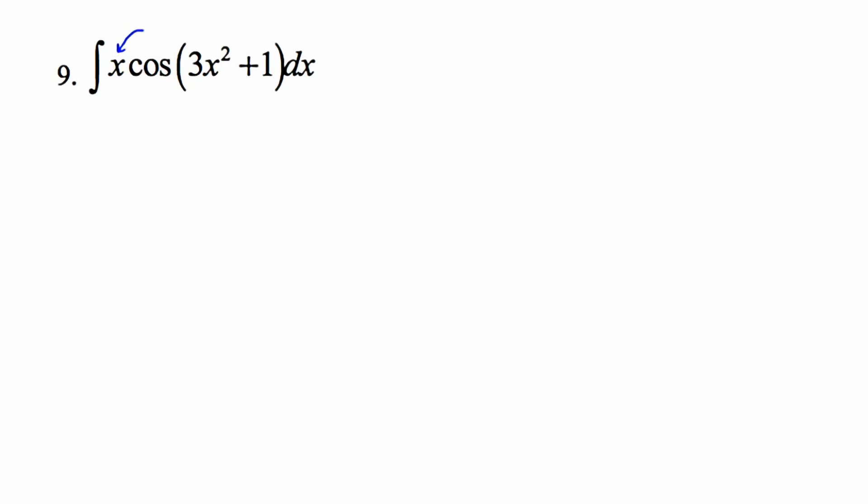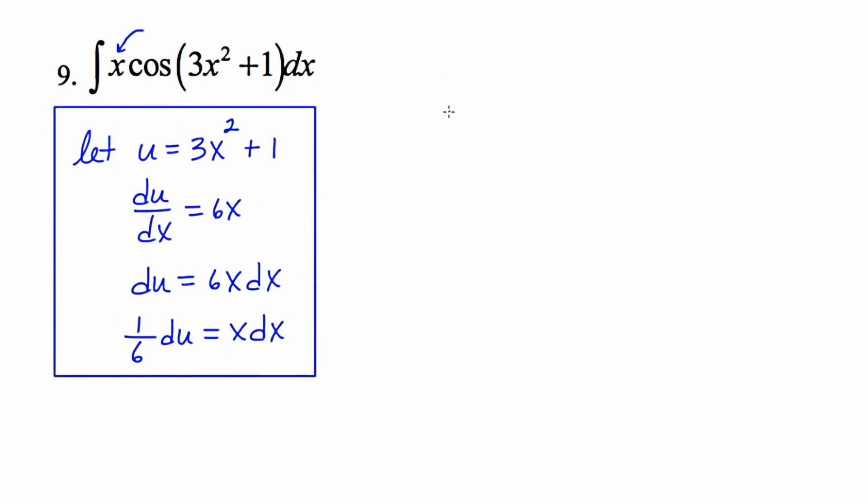So I'm going to go ahead and let u equal 3x squared plus 1, which means that du/dx would equal 6x. Du would equal 6x dx, and that 1/6 du would equal x dx. I'm going to take these four components and put them in a box. And I'm going to rewrite the problem with that x that's in the front and the back. So I'm going to start with cosine of 3x squared plus 1, take the x that was in the front and write it here, and then it concludes with a dx.